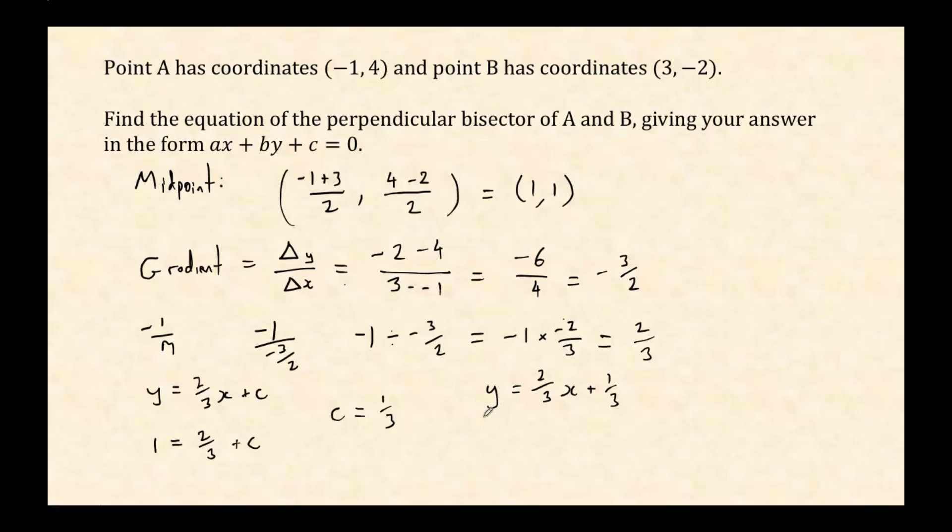So if I multiply the entire thing by 3, I get 3y equals, and then if I multiply this by 3 I just lose that denominator of 3, so 2x, and a third times 3 is 1.